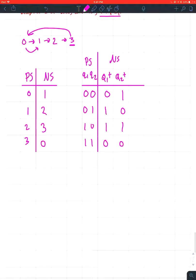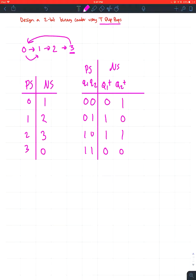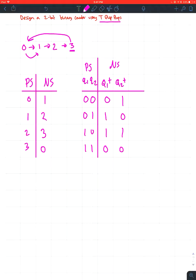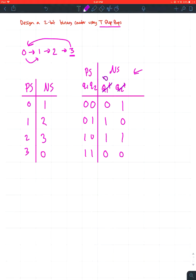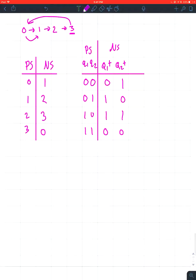Now I need the state assignment table for a T flip-flop. If they asked for a D flip-flop I could just cross these out and put D's, but I need the T flip-flop so I'm going to use a state excitation table for T.